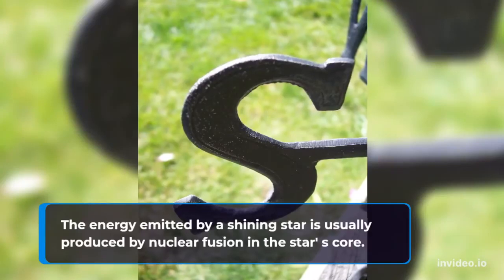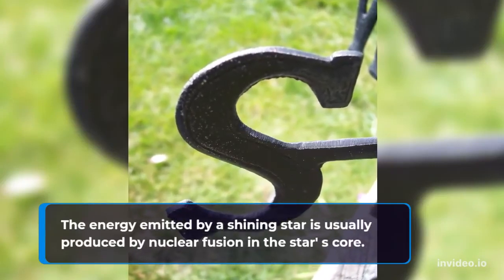The energy emitted by a shining star is usually produced by nuclear fusion in the star's core.